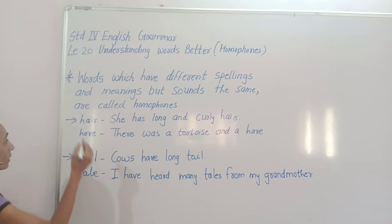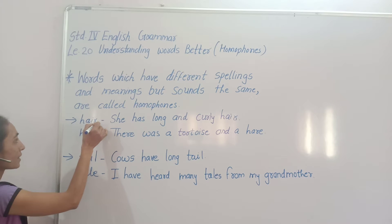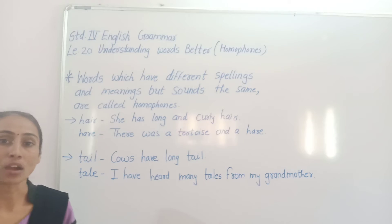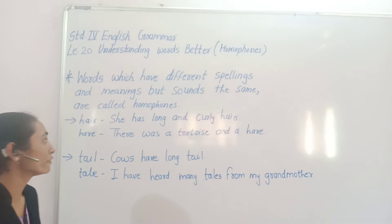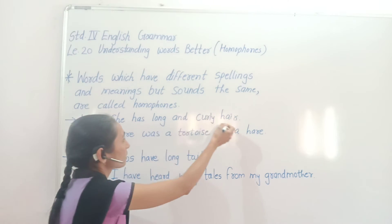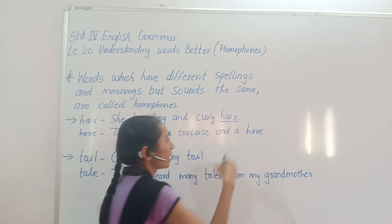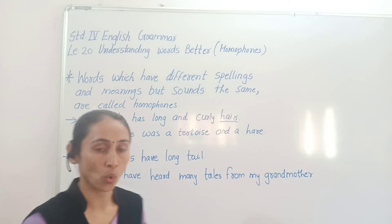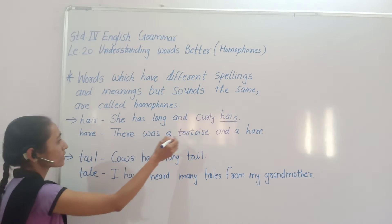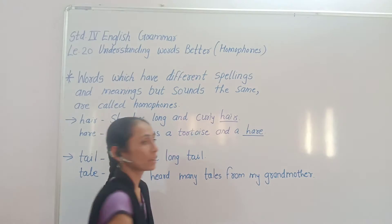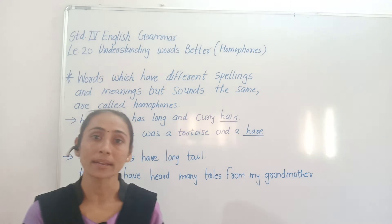For example, yahan pe do words hain: h-a-i-r, 'hair', aur h-a-r-e, 'hare'. Dono ke sound same hain, but unke meanings different hain. Like: 'She has long and curly hair.' Yahan pe hair ka matlab hota hai baal. Next: 'There was a tortoise and a hare.' Yahan pe 'hare' ka matlab hoga rabbit.